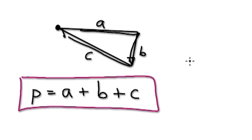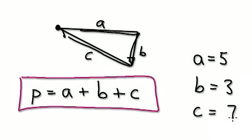So now, if someone gives us a triangle where A is 5, and B is, let's say, 3, and C is, let's say, 7.